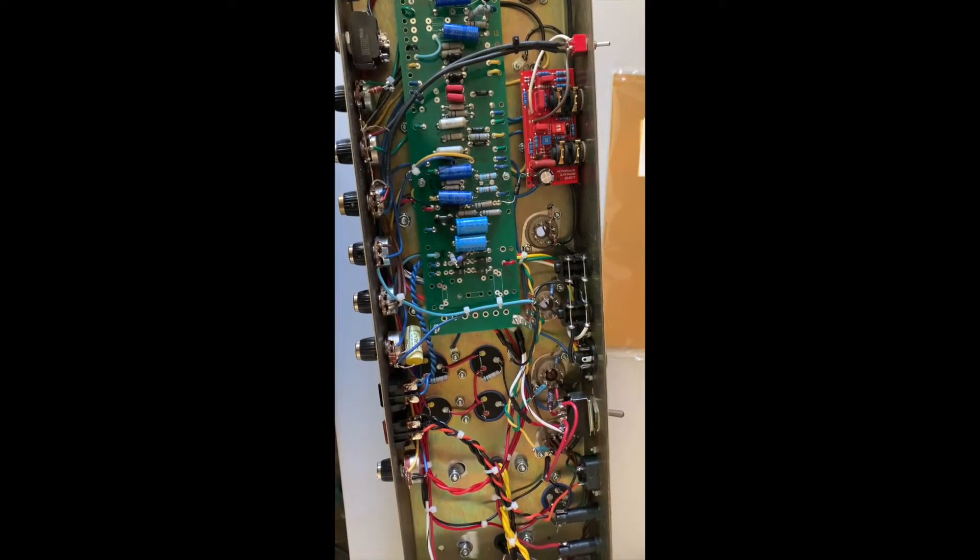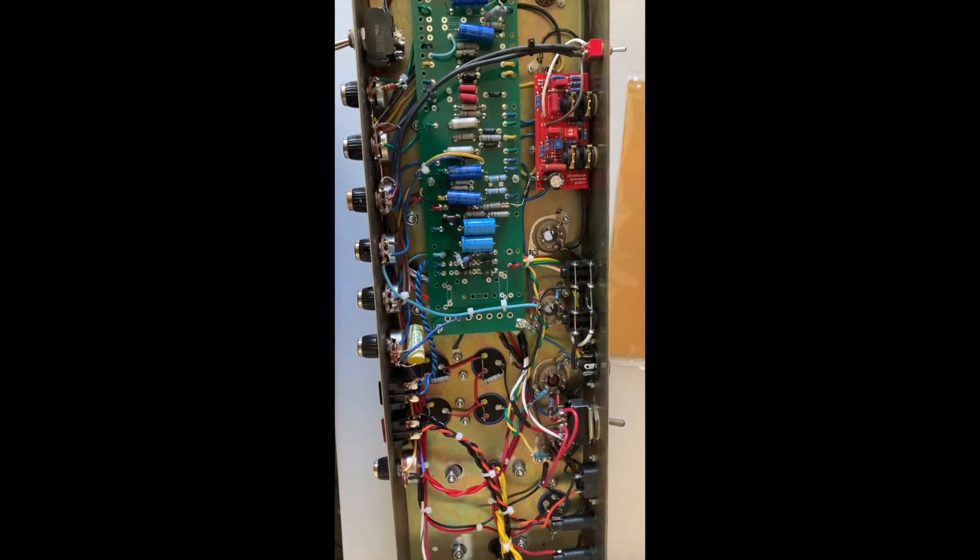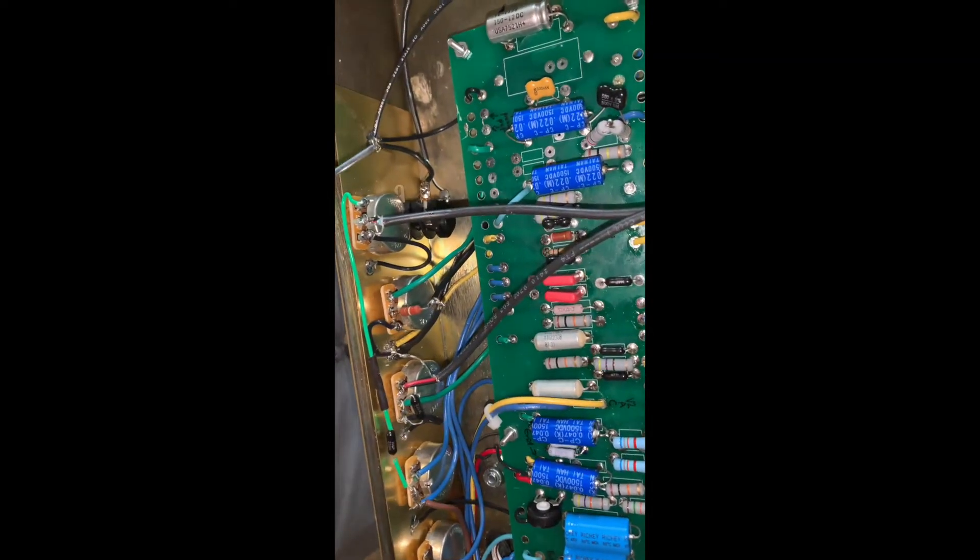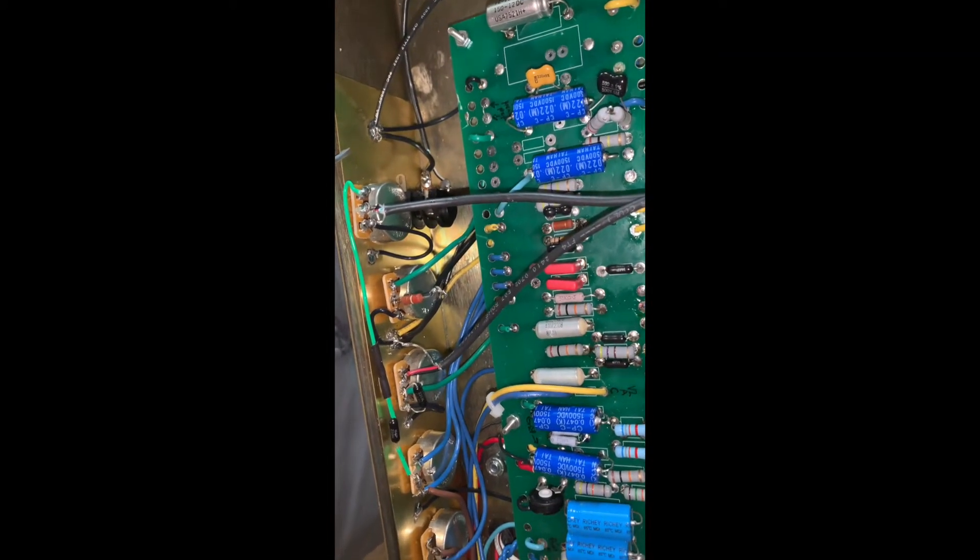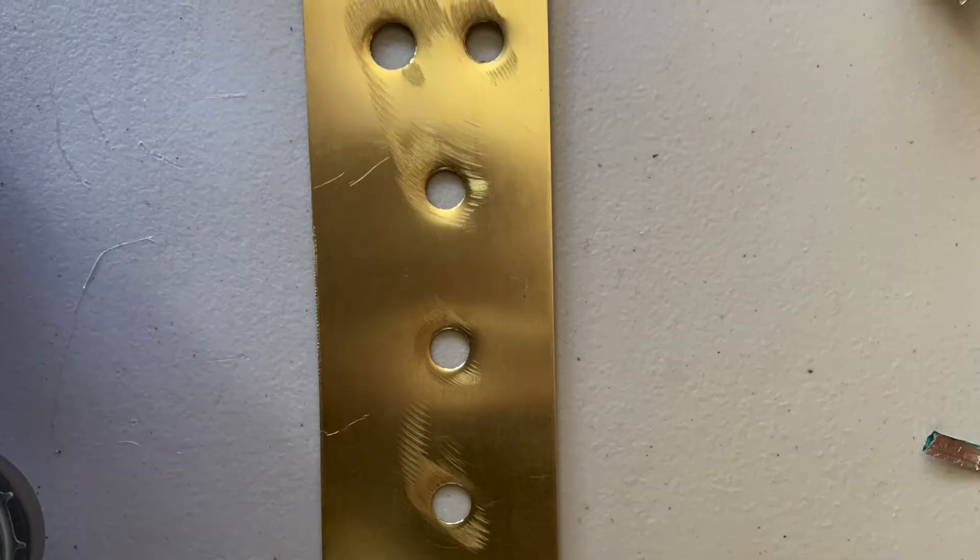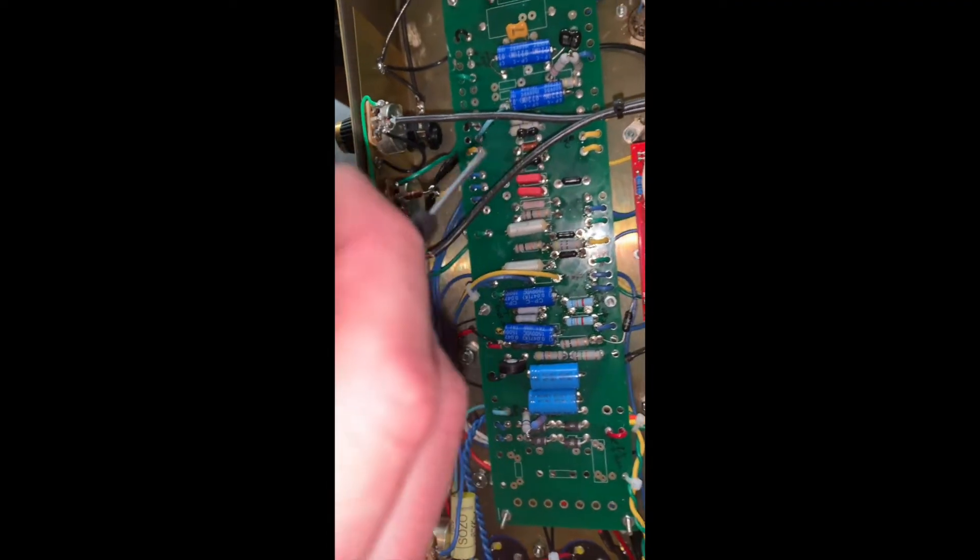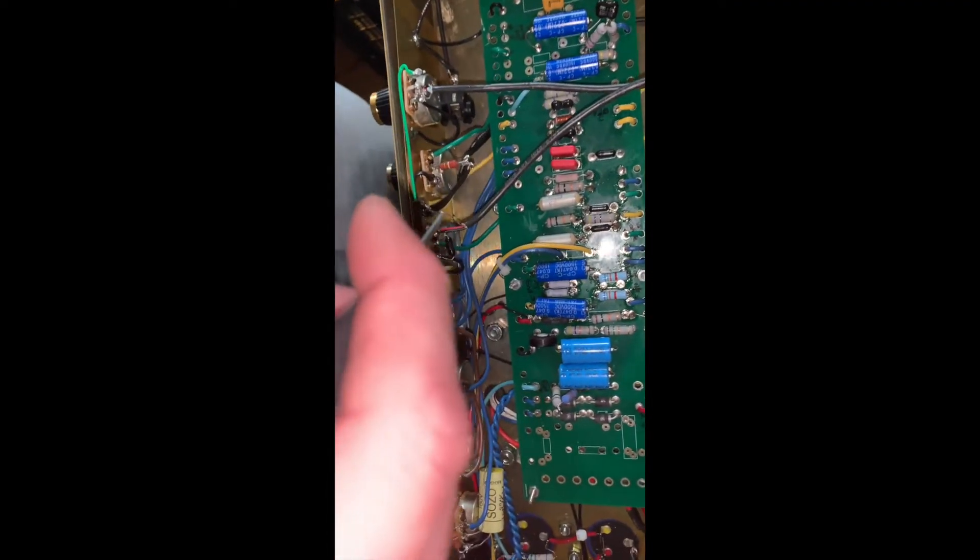So let's get to work updating this baby. So here we are with the final product, the brass plate mounted in behind all the pots, and all the grounds associated with the preamp circuit soldered to the plate.